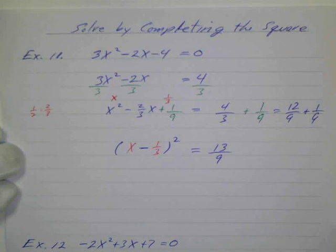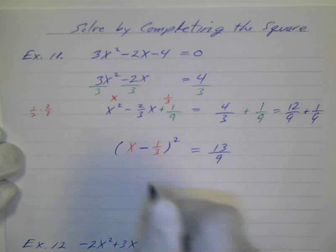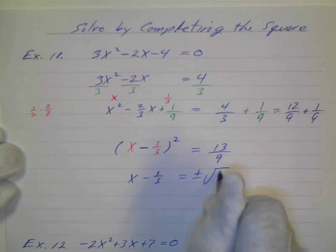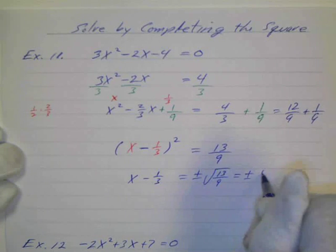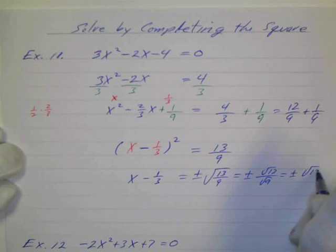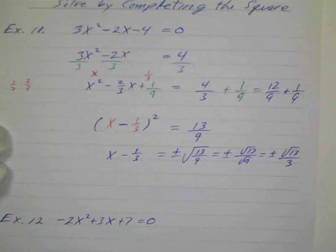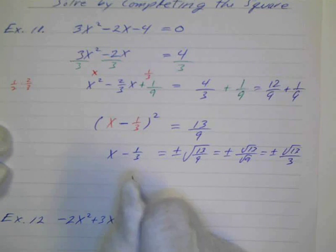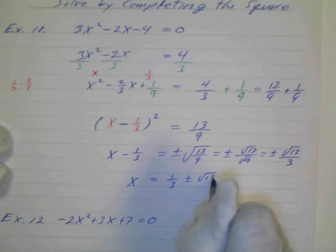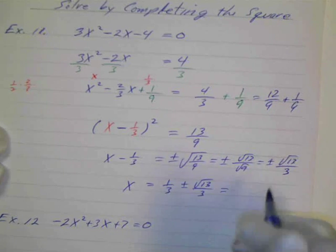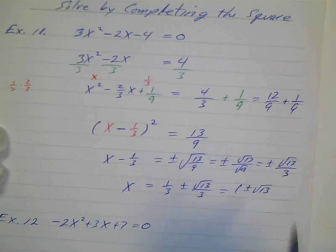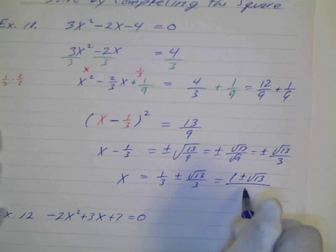And I know if x minus 1 third squared equals 13 ninths, I know that x minus 1 third equals plus or minus the square root of 13 over 9, which is plus or minus the square root of 13 all over 3. So if I add 1 third to both sides, I know that x equals 1 third plus or minus the square root of 13 all over 3. And I could put those over a common denominator of 3, so I could write 1 plus or minus the square root of 13 all over 3.